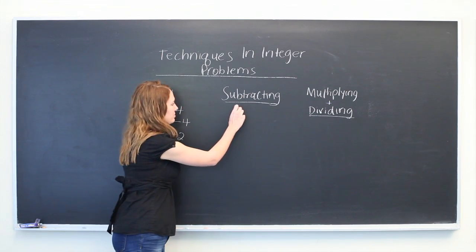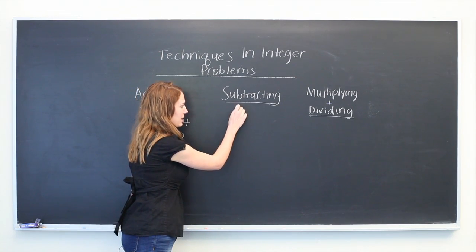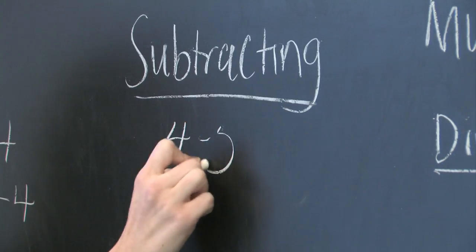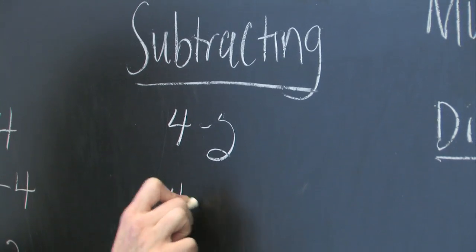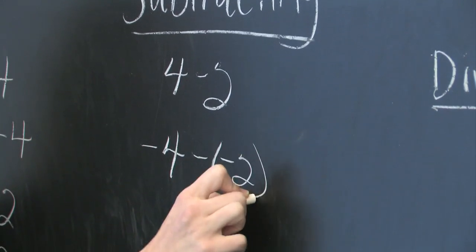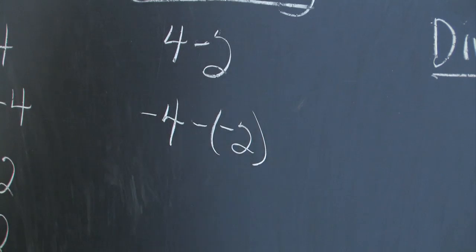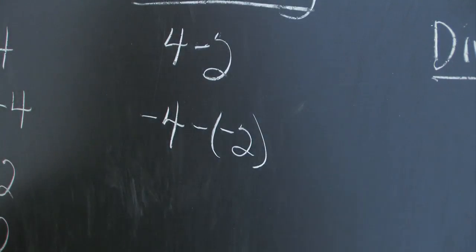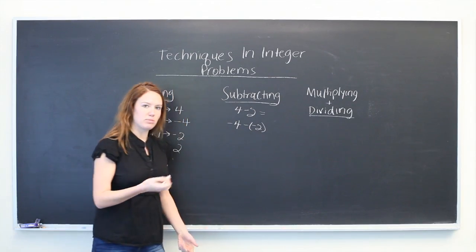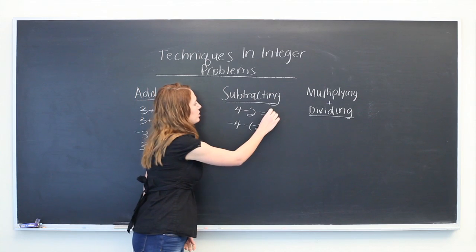Now in subtracting, if they're both positive or if they're both negative, we have rules as well. So 4 minus 2, we can just subtract this as you normally would, you'll get 2.